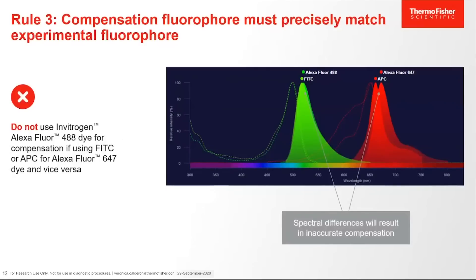Rule 3: compensation fluorophore must precisely match the experimental fluorophore. For example, do not use Alexa Fluor 488 dye for compensation if using FITC in your experimental sample. Or do not use APC for compensation if using Alexa Fluor 647 in your experimental sample, and vice versa. Spectral differences, though sometimes minimal, will result in inaccurate compensation.